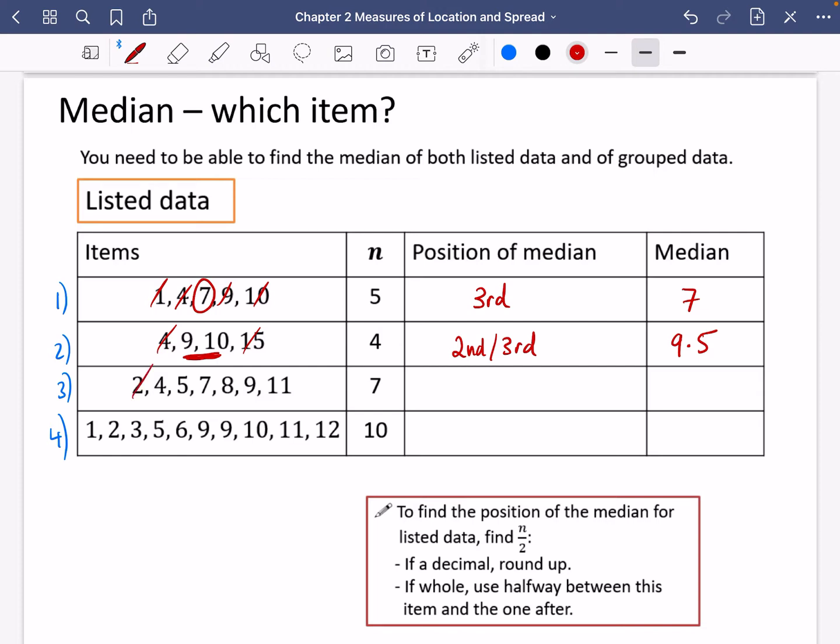This time we've got seven numbers. So I'm going to cross off either end until I'm left with something in the middle. And when there are seven things, one, two, three, four, the median is in the fourth place. And the value of that median in this case is seven.